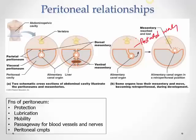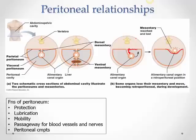Some organs are pushed back so that the peritoneum covering them disappears on one side. These organs are only covered by peritoneum on the sides and in front, unlike organs covered all around. Such organs are known as retroperitoneal — 'retro' meaning behind.